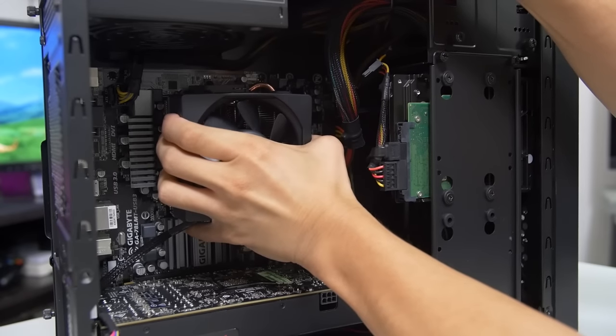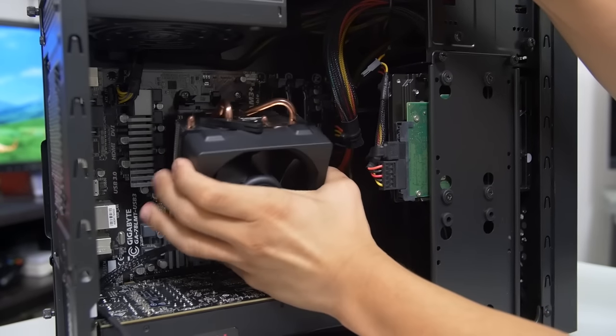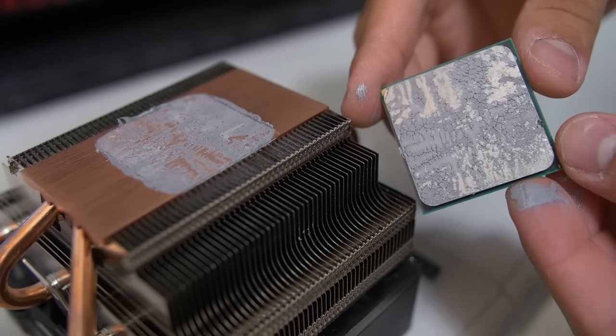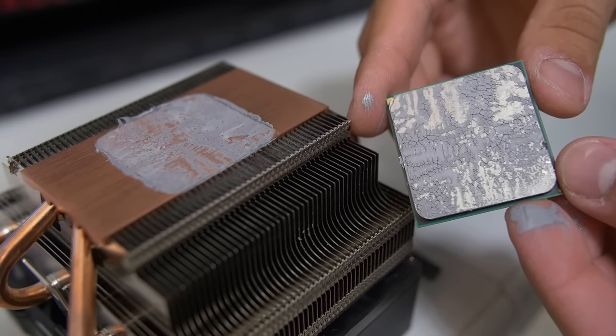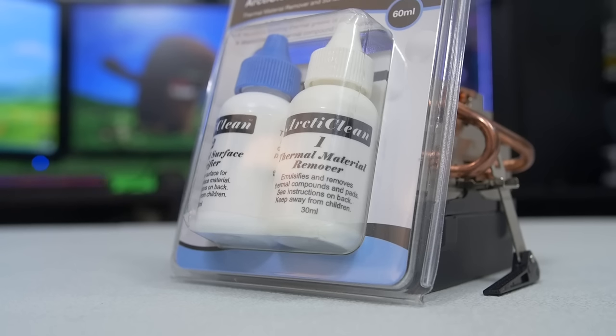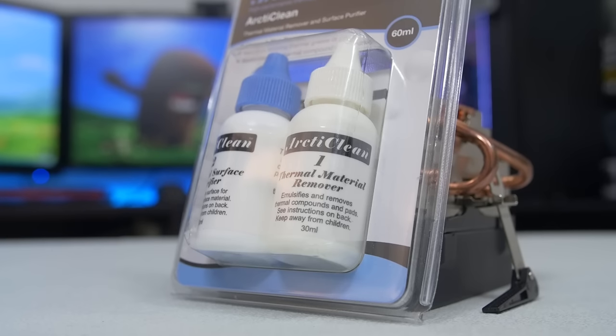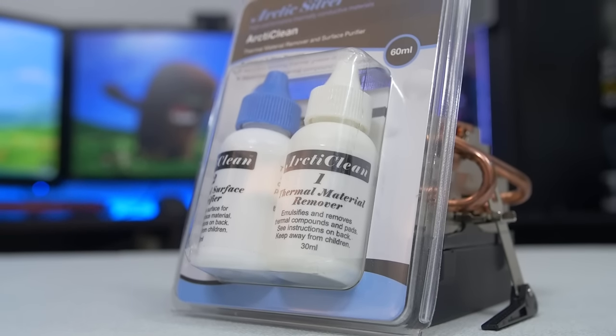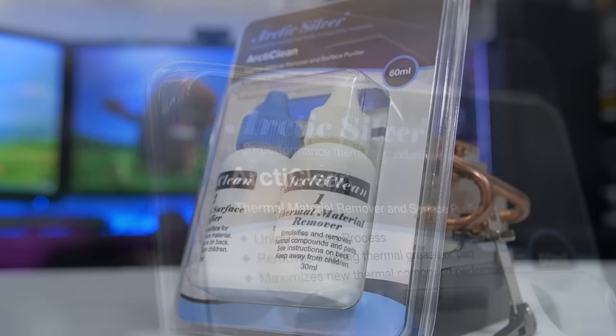Now every now and then when building a PC, I'll have to reseat my CPU cooler for some unexpected reason, leaving the base plate and my CPU a sticky goopy mess. But until some genius invents edible thermal paste that I can just lick off of my hardware, sounds suggestive, I'll continue using this thermal compound remover kit from Arctic Silver.